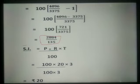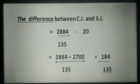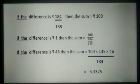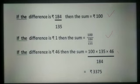Now we calculate simple interest. Simple interest equals P into R into T divided by 100. Putting values: 100 into 20 into 3 divided by 100 into 3, which gives Rs. 20. The difference between compound interest and simple interest is 2,884 divided by 135 minus 20, giving 184 divided by 135. Applying the unitary method: if the difference is Rs. 184 divided by 135, then the sum is Rs. 100. If the difference is Rs. 1, then the sum is 100 upon 184 divided by 135. If the difference is Rs. 46, then the sum is 100 into 135 into 46 divided by 184. On solving, the sum is Rs. 3,375.